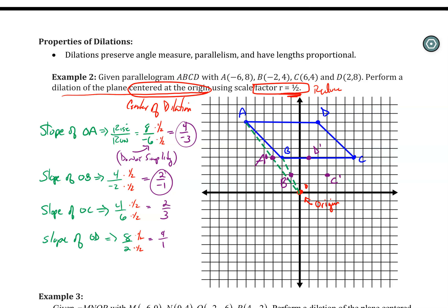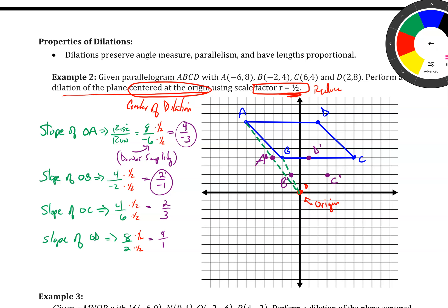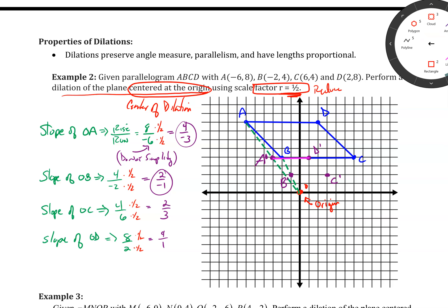Now I have a new figure — I'll connect all the dots in a different color to create my new parallelogram and shade it in so it's easy to see. Doing a visual check: all of my corresponding sides should be parallel to each other. A prime B prime should be parallel with AB, A prime D prime with AD, and so on. Everything looks good — so there is my dilation about the center of the origin with a scale factor of one half.